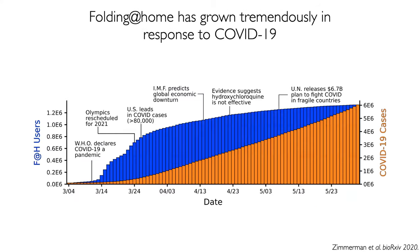We had 30,000 devices participating at the beginning of 2020. Here in blue I'm showing the cumulative downloads of our software over the first few months of the pandemic. Within the first couple of months, we rose to having well over a million devices around the world actively participating in Folding@Home at a given time. The upshot is that Folding@Home became the most powerful supercomputer in the world — the first to measure its performance in units called exaflops. We very conservatively estimate that we have five times the raw computing power of the world's fastest supercomputer at the time, the Summit supercomputer in the US.